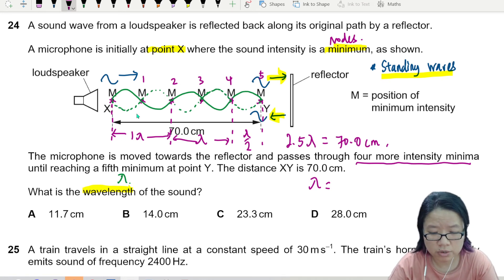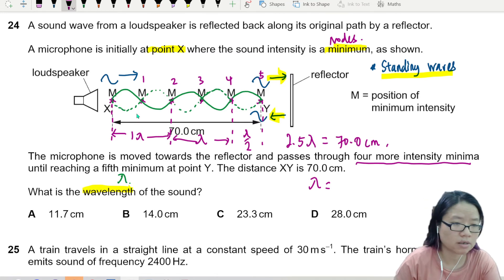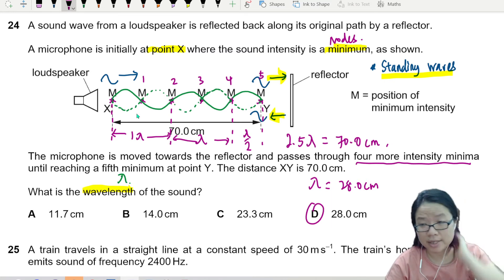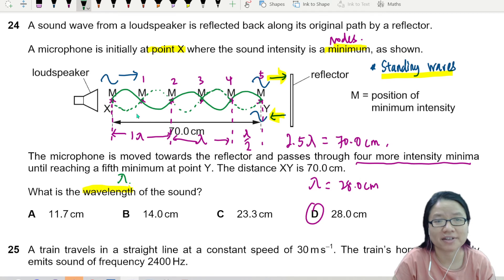So if you need a bit of help, the main skill here, this is 28.0 cm. Answer is D. The main skill here that we are testing is number one, can you identify a standing wave? If you cannot, then you know to start the question already.